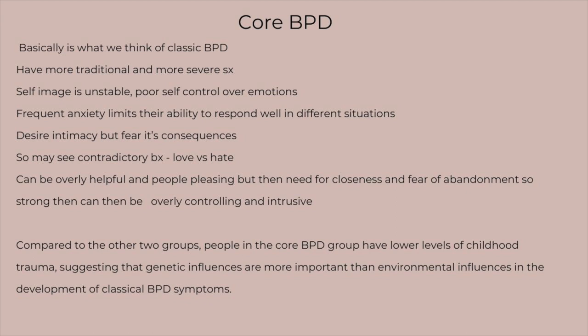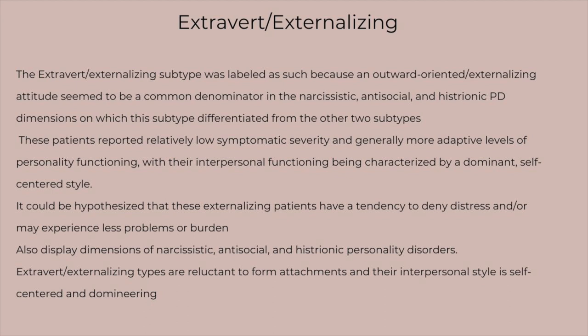The core BPD group showed classic, more severe BPD symptoms: unstable self-image, poor emotional self-control, anxiety, and that contradictory love-hate splitting behavior. They had a strong desire for intimacy but acted out in ways that sabotaged it. Interestingly, compared to the other two groups, people in the core BPD group had lower levels of childhood trauma — suggesting a stronger genetic or hereditary component than may have been previously thought, which I find really fascinating.